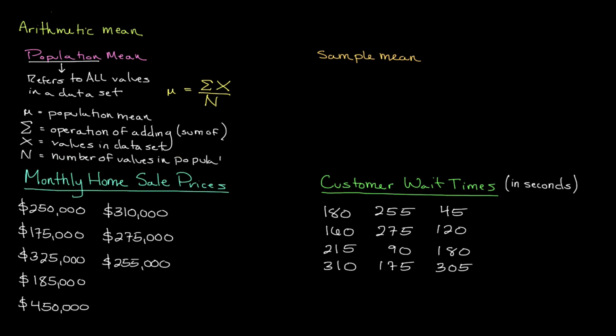Looking at our dataset, we have a list of monthly home sale prices in a market. Since we're looking at all of the selling prices within a market, we know that we need to compute the population mean. The first thing that we need to do is add up all of the values in the population, which is reflected by the Greek letter sigma. The sum of our monthly home sale prices is $2,225,000.